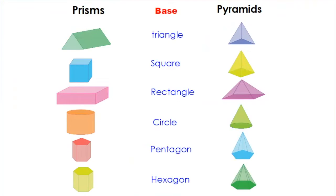Before talking about types, let's briefly compare pyramids and prisms. The main difference is that a pyramid has only one base and always has triangular-shaped sides, with all sides meeting at a single point — the apex — located above the center of the base. A prism, on the other hand, has two polygon bases and rectangular sides perpendicular to the base, with the same cross-section throughout.